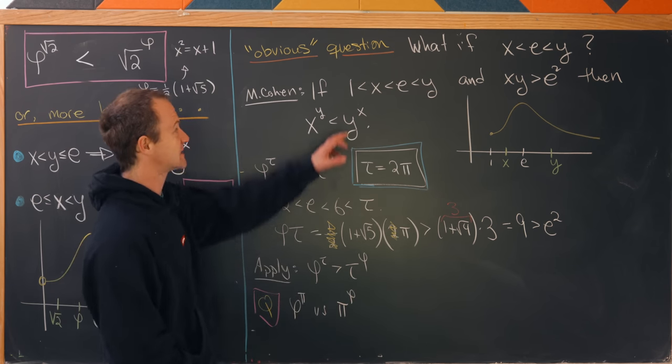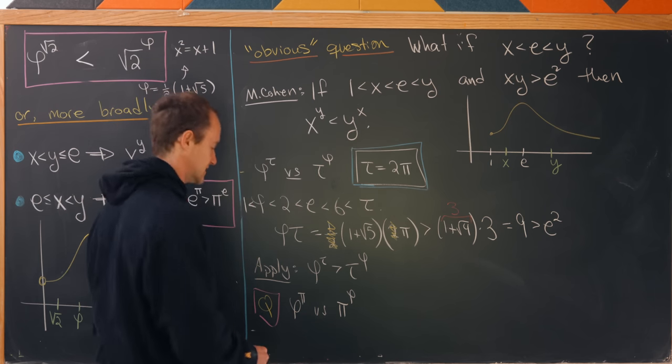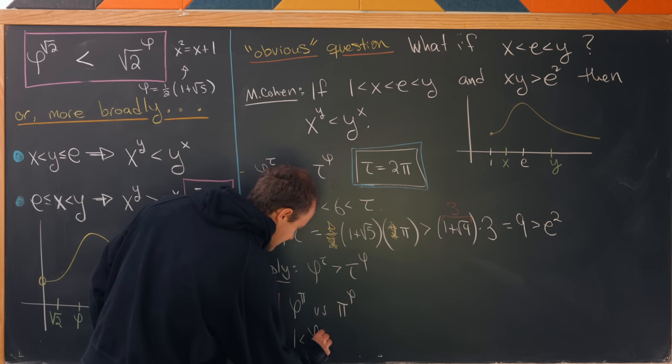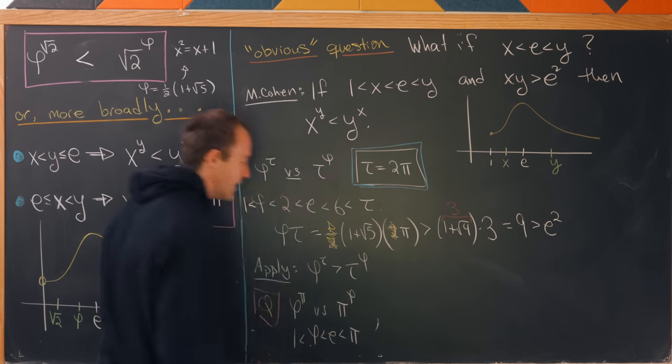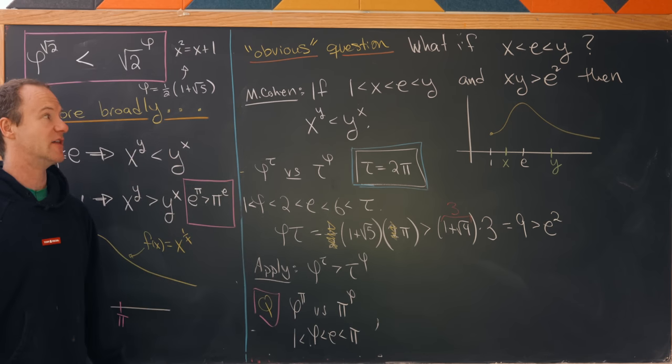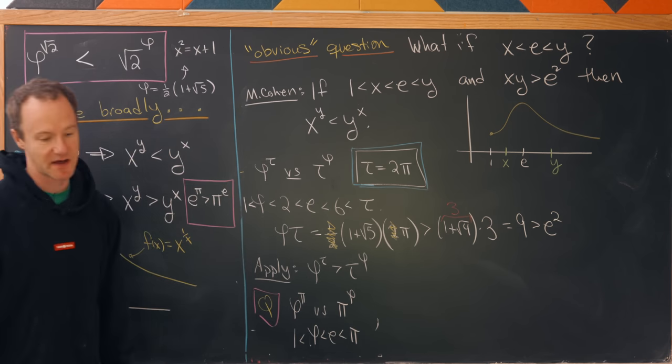So, notice this satisfies part of the hypothesis here. We have 1 is less than phi, which is less than e, which is less than pi. But it does not satisfy the other portion of the hypothesis.